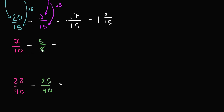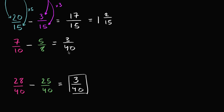7/10 minus 5/8 is the exact same thing as 28/40 minus 25/40. If I have 28 fortieths and take away 25 of those fortieths, how many fortieths am I going to have left? I'm going to have 3 fortieths. 28 minus 25 is 3. So 7/10 minus 5/8 is 3/40.